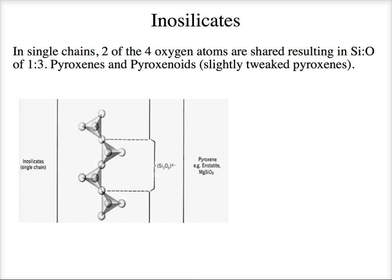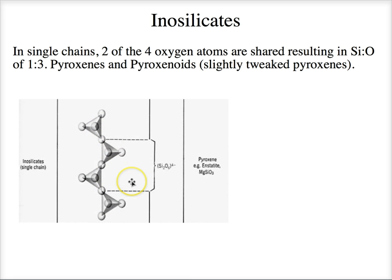In the single chains, two of the four oxygen atoms in each tetrahedron are linked. When we look at a line of silica tetrahedra, this one is linked to this one, and this one to this one. If you look at two tetrahedra and count the oxygens — two of those oxygens are shared with the next one — it turns out to be a one-to-three ratio: two silicons to six oxygens, or one to three.